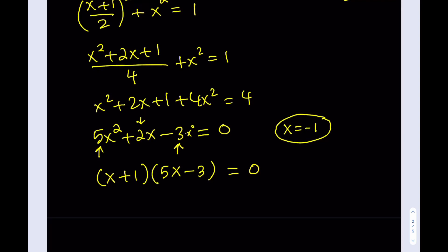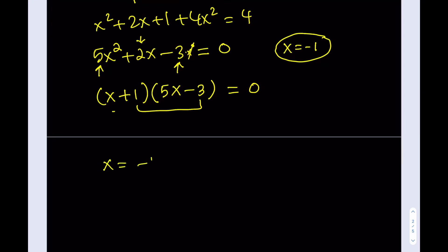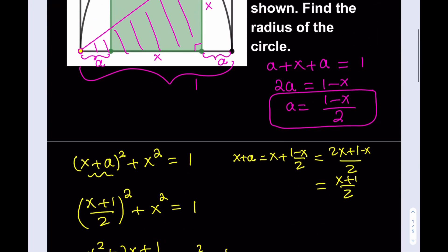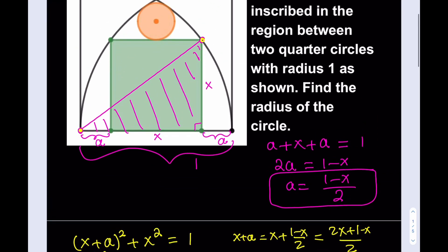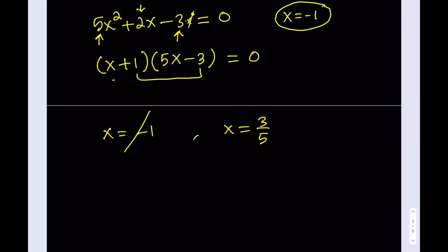It's also important to check this. If you distribute, you get 5x squared minus 3x plus 5x, which gives 2x, and 1 times negative 3 equals negative 3 — everything checks out. Using the quadratic formula gives the same two solutions: x equals negative 1 and x equals 3/5. We can't take negative 1 because x is the side length of the square, so there's no way x can be negative. We reject that solution, and x equals 3/5. So the side length for the square is 3/5.